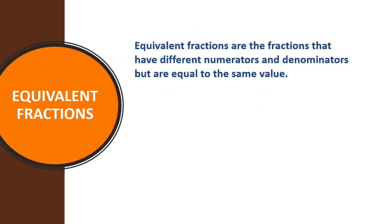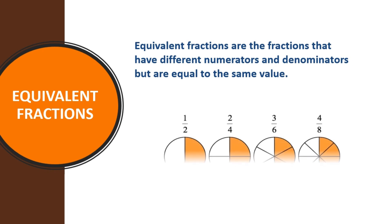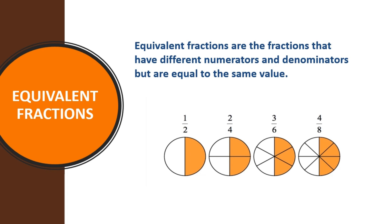Equivalent fractions: what do we mean by equivalent fractions? Equivalent fractions are fractions that have different numerators and denominators but have the same value. For example, out of 2 equal parts taking 1, out of 4 equal parts taking 2, out of 6 equal parts taking 3, out of 8 equal parts taking 4 — all have the same value, but the numerators and denominators are different. These are called equivalent fractions.